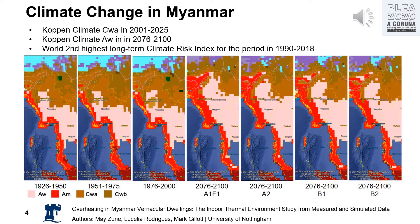Northern Myanmar historically features a temperate climate with a winter dry season, and that climate is likely to be replaced by an equatorial winter dry climate by 2076 because of global warming. Currently, no research has found how housing in Myanmar will perform under changing climate conditions.